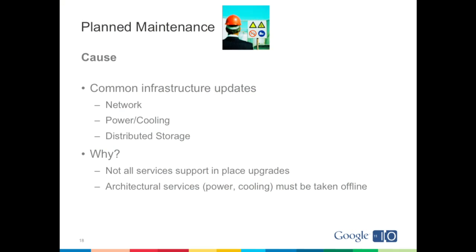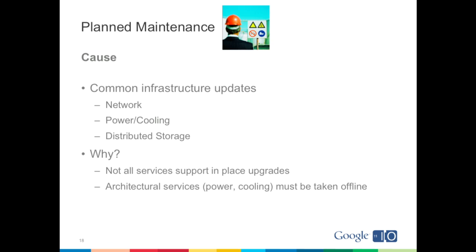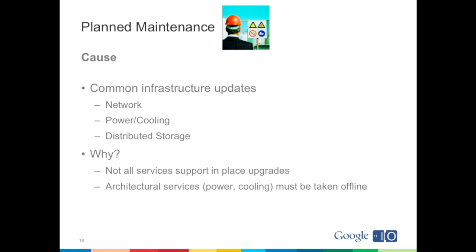Let's talk about how these two datastores differ in less common cases. The first is planned maintenance. Google data centers undergo planned maintenance periods during which low-level infrastructure — networking, power, cooling, cluster management, distributed storage services — requires downtime. Most Google services, including App Engine, can do in-place upgrades so your app doesn't notice. However, with low-level things like power, that's hard. Google groups these upgrades into contiguous time periods so that chaotic maintenances happen at the same time, and a data center can be offline for several days.